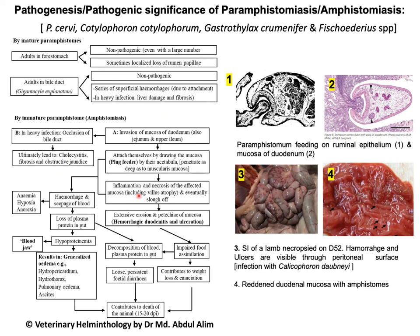To summarize the pathogenic significance of Paramphystomosis: adult parasites are generally non-pathogenic. Immature parasites are highly pathogenic and may cause hemorrhagic duodenitis and ulceration of the duodenum. The pathogenesis also includes generalized hypoproteinemia, fluid accumulation in different organs, and altogether the animal may die within 15 to 20 days post-infection.